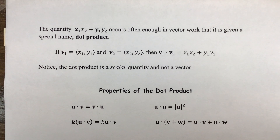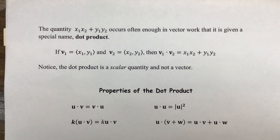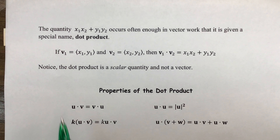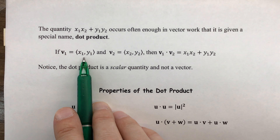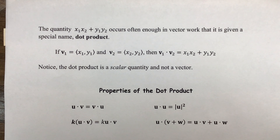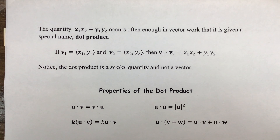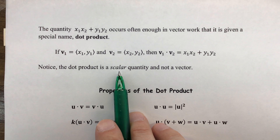The last calculation we did — which we used to verify that two vectors were perpendicular, the product of the x's plus the product of the y's — occurs surprisingly very often when we're working with vectors, so often that we've decided to call this the dot product. The dot product takes two vectors in component form, multiplies their x-components, multiplies their y-components, and adds them together. The end result is not a vector but a scalar quantity — it's just a number. Like in our last calculation, the answer was 0, which is not a vector but simply a number.